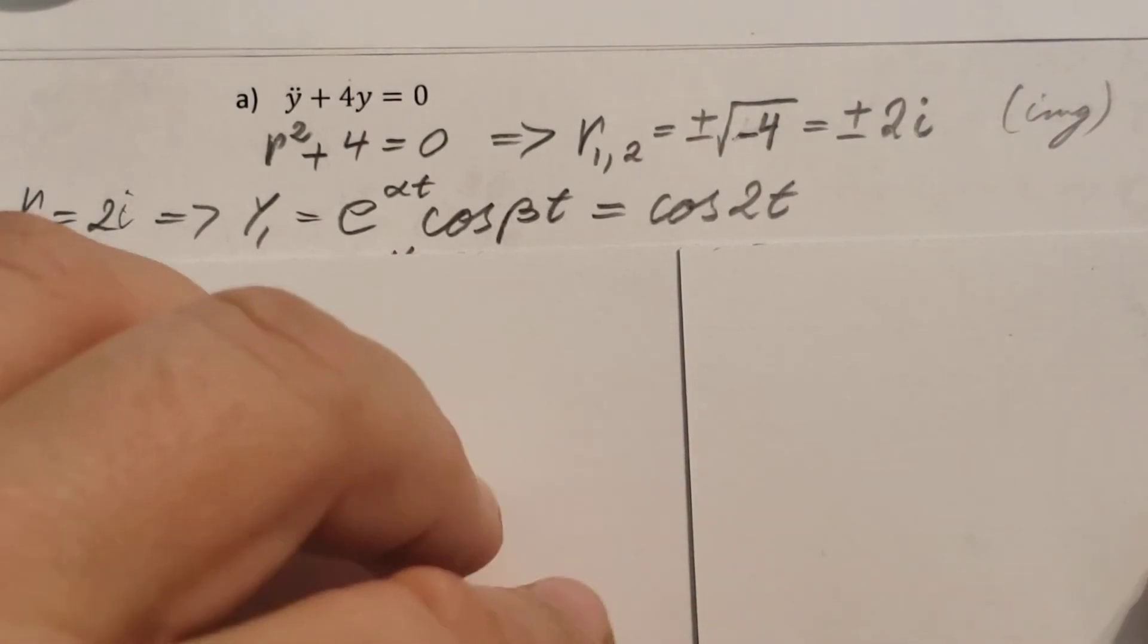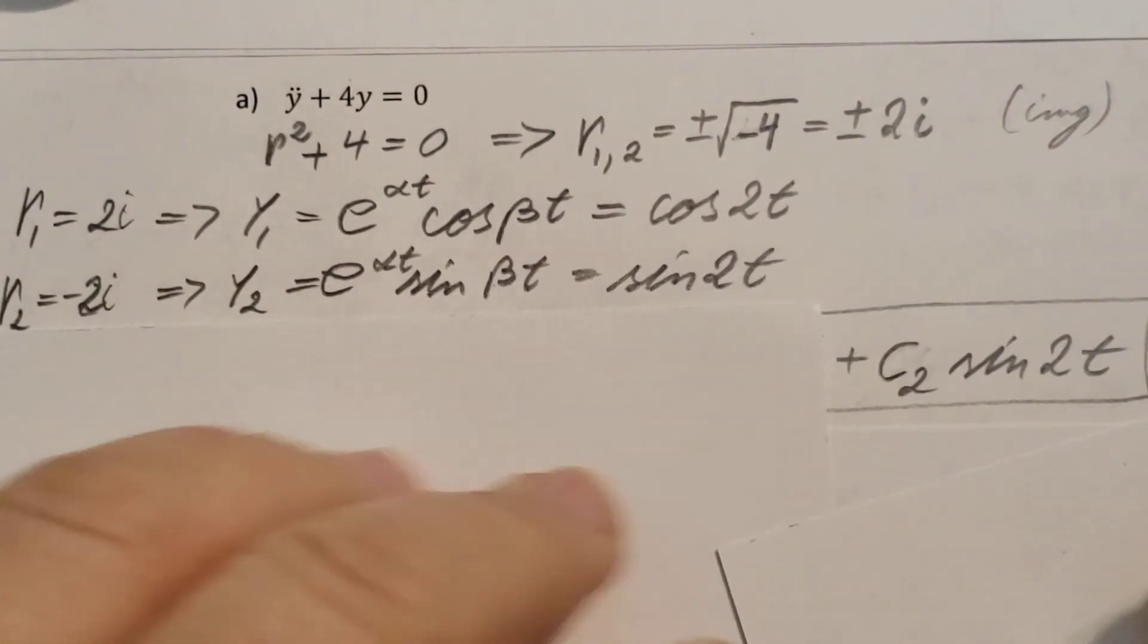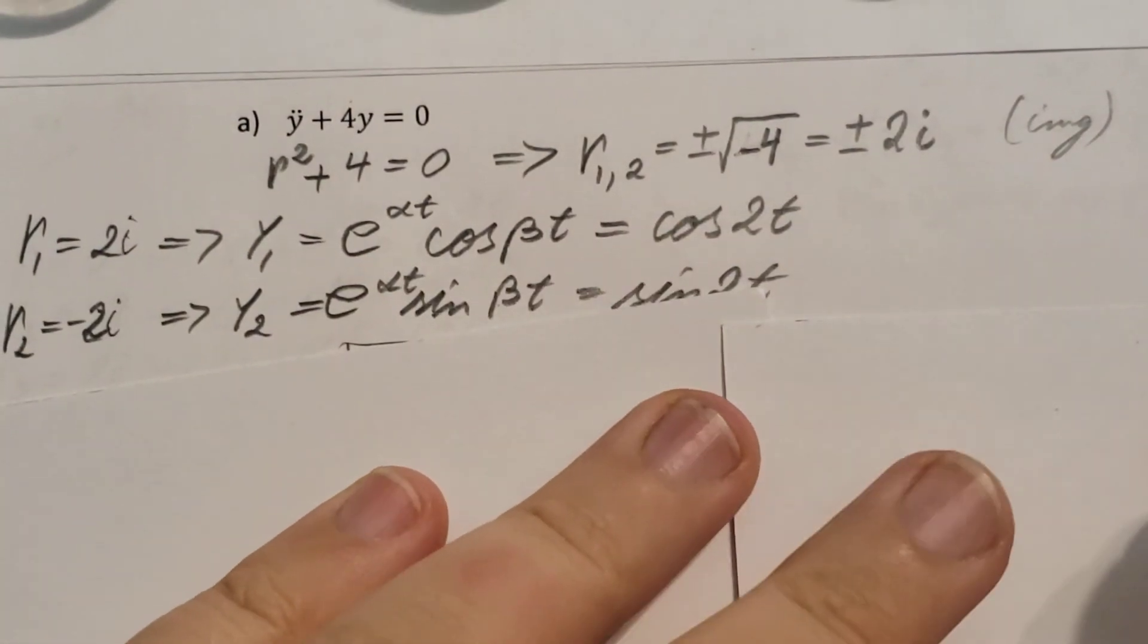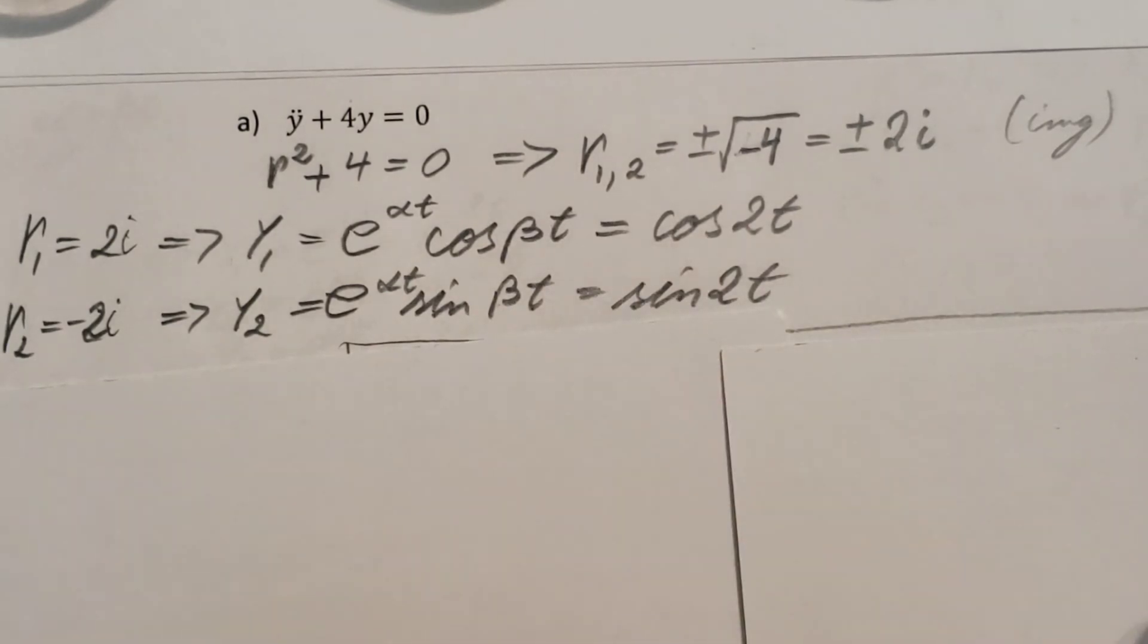Now, let's take the second root. There you go. Now, r2 minus 2i, the second root from here. Now, for this one, we're using y2 equals e to the alpha t times sine beta t.